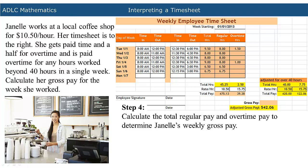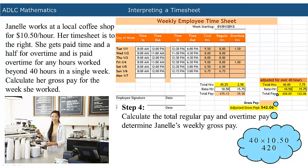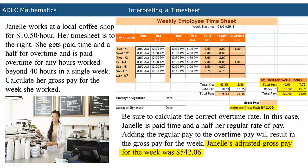The last step is to calculate the total regular pay and overtime pay to determine Janelle's weekly gross pay. To calculate the total pay, you must multiply the total hours by the rate per hour paid for regular and overtime hours. Janelle is paid time and a half per regular pay for overtime. Adding the regular pay to the overtime pay will result in the gross pay for the week. Janelle's adjusted gross pay for the week was $542.06.